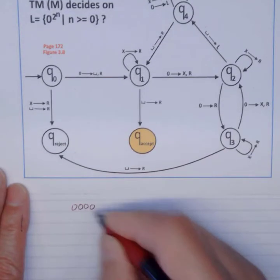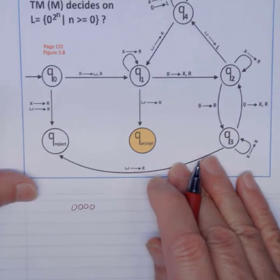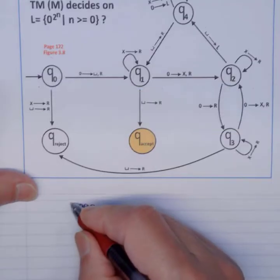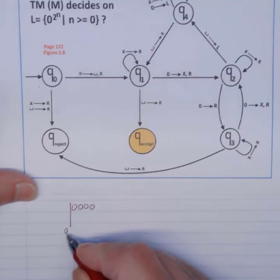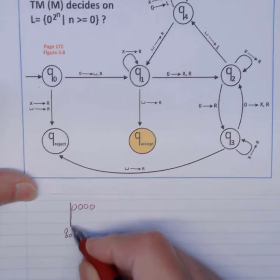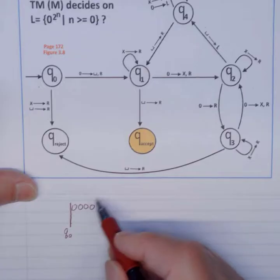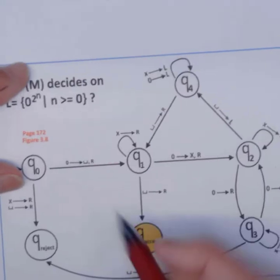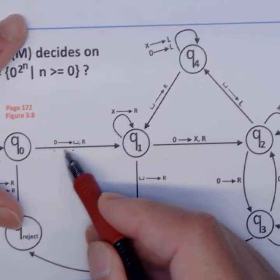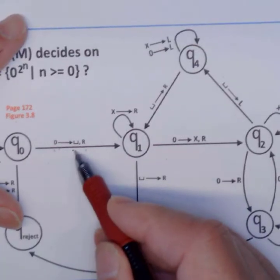Every teacher I know has a different style of doing this. My style is I am at the starting state Q0. So here we go. I draw a line, and I put Q0 there under this line here, and that's my starting state. So I'm at the starting state. I am reading that if I see a 0, I move to the right, but I change that 0 to a blank.